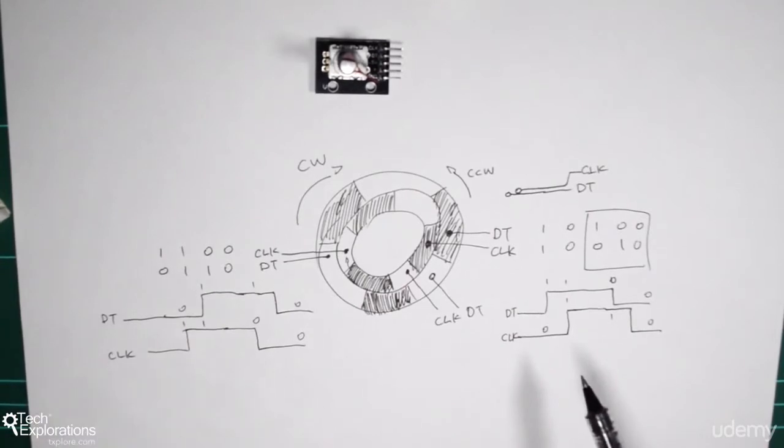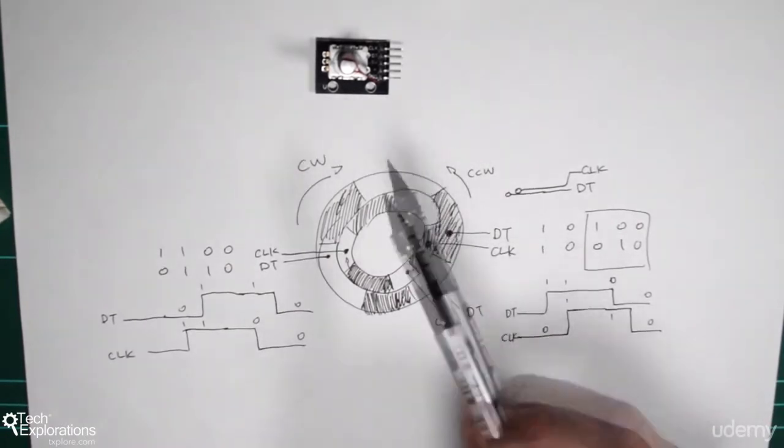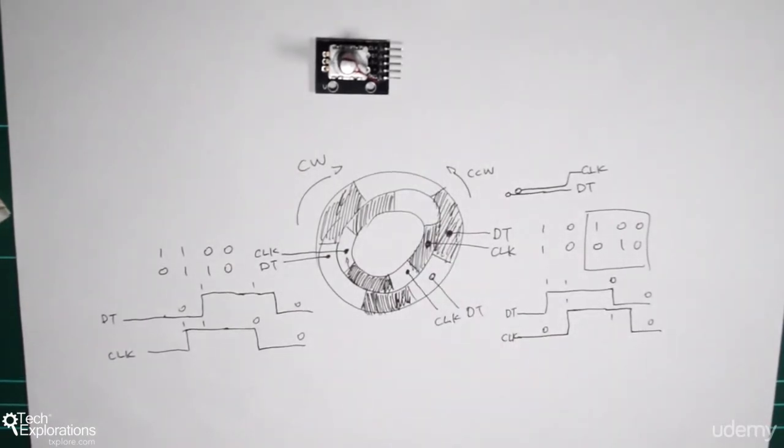Now, this is the principle of operation, and this is the type of pulses that we'll have to take advantage of when we want to read readings out of the rotary encoder. So with all this said, let's go and build the first circuit.